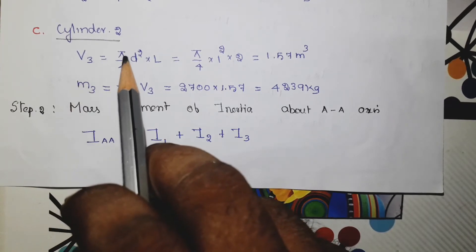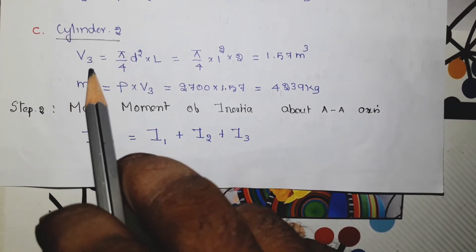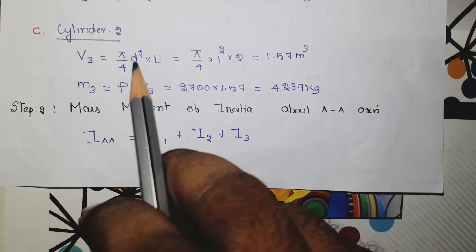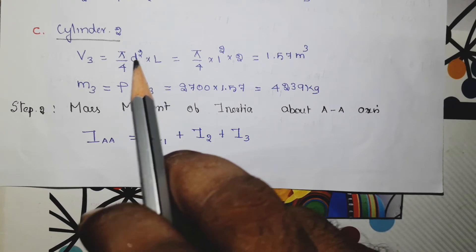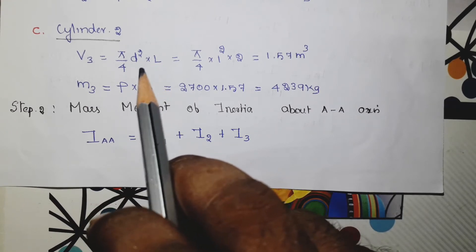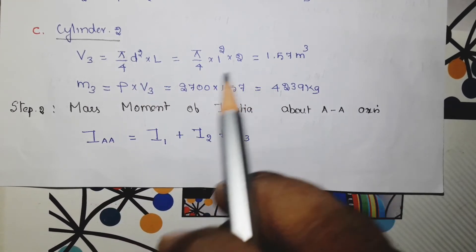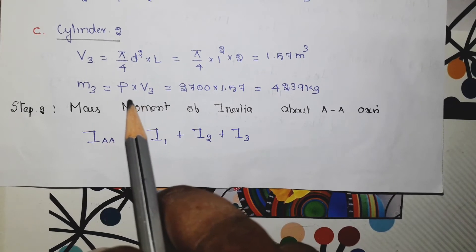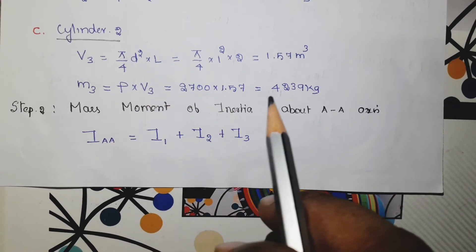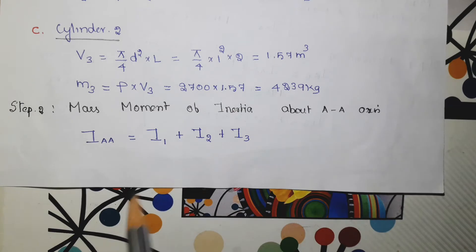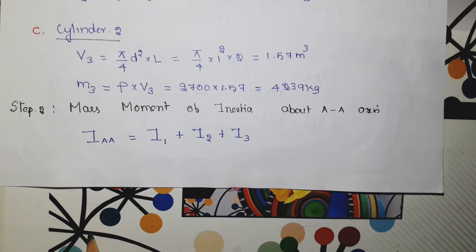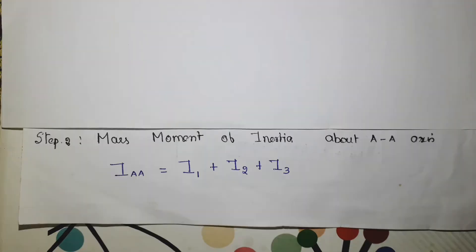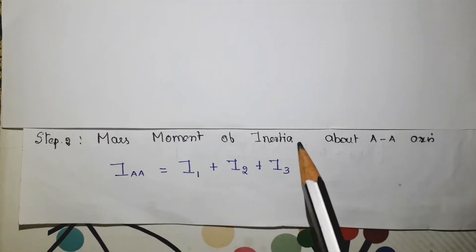For cylinder 2, repeat the same process with volume V3 using the same formula and same dimensions. Substituting gives the volume as 1.57 meter cube, and m3 equals ρ into volume, giving 4239 kg. Now the second step is finding the mass moment of inertia about the AA axis.